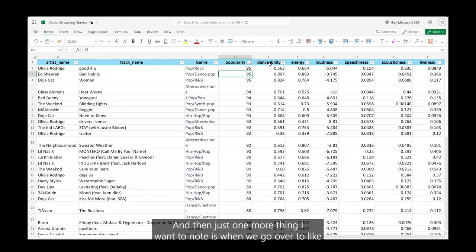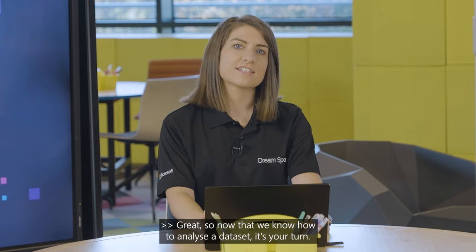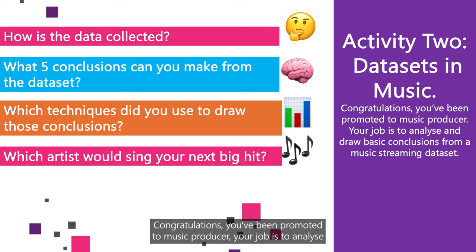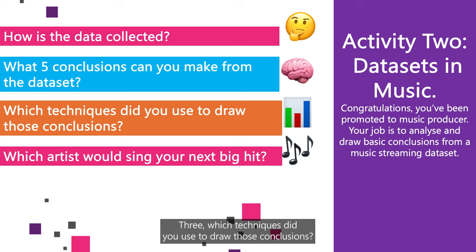One more thing to note: when we look at danceability and energy, you're looking for the number closest to 1.0 — the higher the number, the more energy and loudness the song will have. Now that we know how to analyse a data set, it's your turn. You've been promoted to music producer! Your job is to analyse a music streaming data set and answer: how is the data collected, what five conclusions can you make, which techniques did you use, and which artist would sing your next big hit?